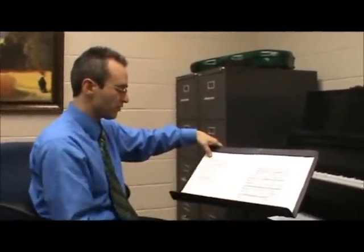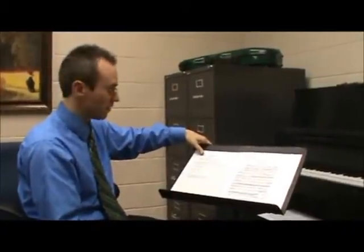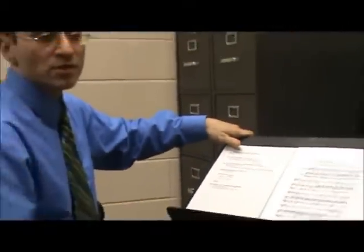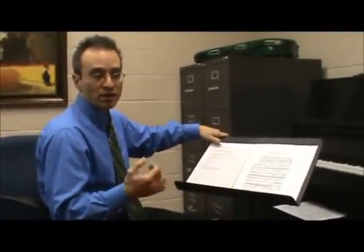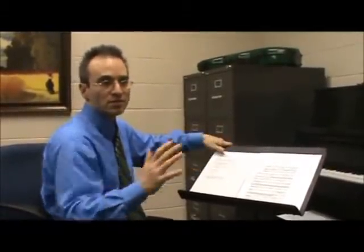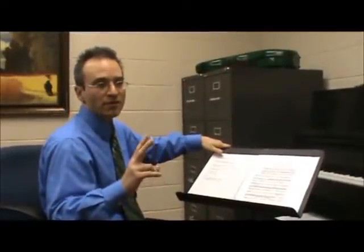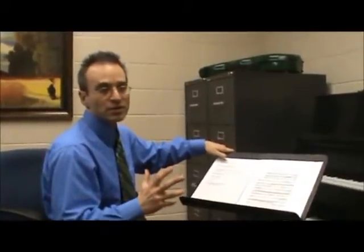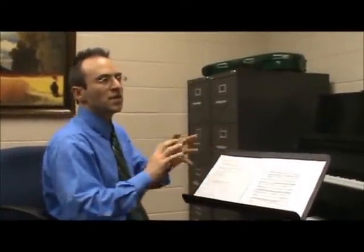Having done modal mixture, we're ready for mixture pivot modulation. That means we're going to use a mixture chord as a means of pivoting to a distantly related key. Remember that we measured distance in terms of key signatures — basically looking at the difference in accidentals. If you're within an accidental of another key, that's a close relationship. They're distantly related if there are two or more accidentals difference between their two key signatures. So that's distant modulation, and to get to something that far away requires some special procedures.